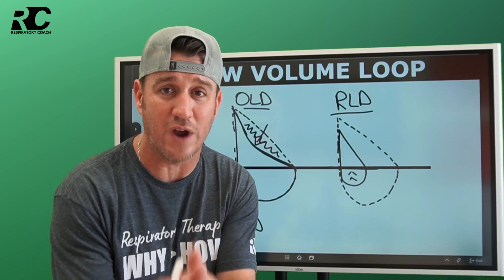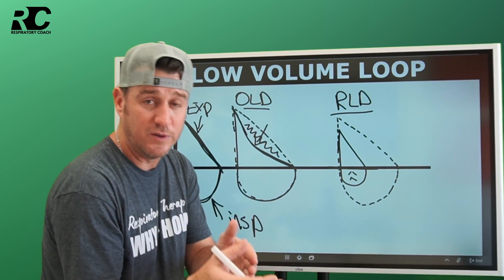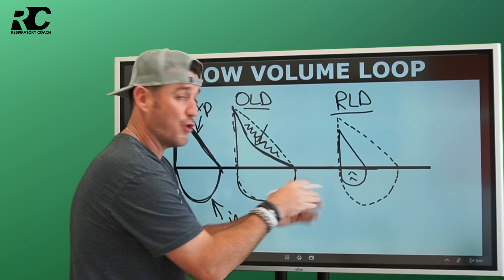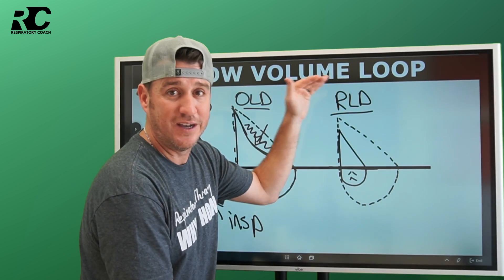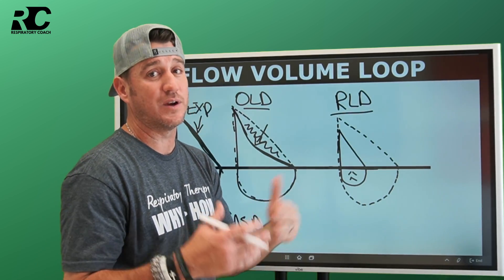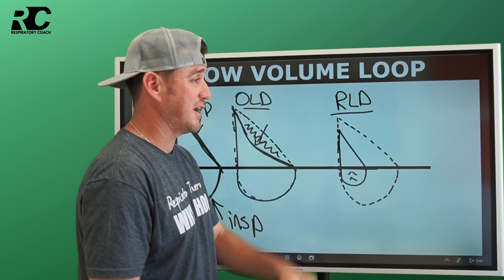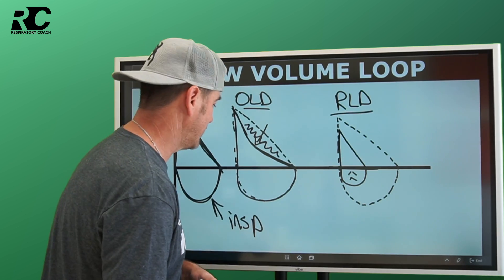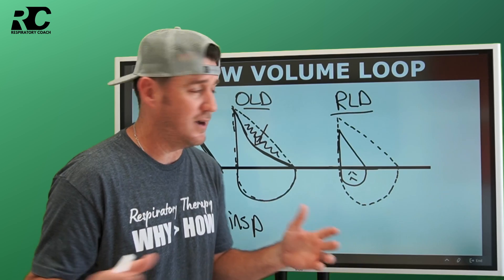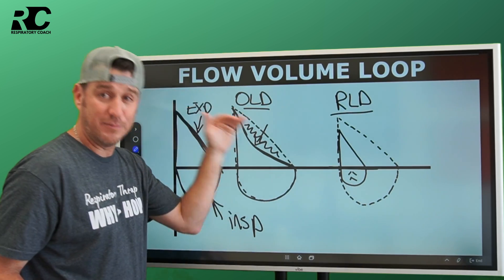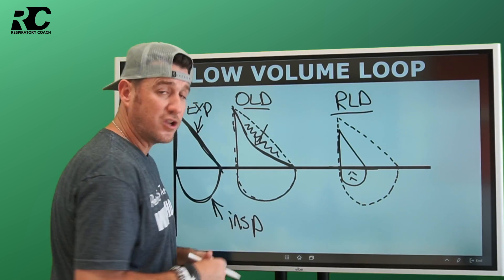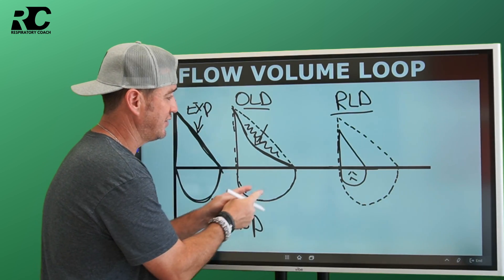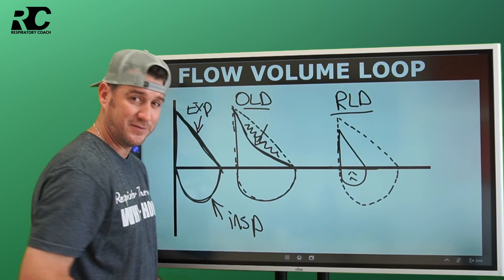We realize that we understand how to differentiate these two. Here's the key take-home message right here. A scoop in the loop equals obstructive lung disease. Think of your C-BABES. A witch's hat or an upside-down ice cream cone? Restrictive lung disease. A lot of times, that's going to bring us back to idiopathic pulmonary fibrosis as well as other restrictive lung diseases such as tuberculosis. There's a whole lot of them out there, but that's the difference between restrictive and obstructive from a flow-volume loop pattern recognition. This is just imagery. If you're a visual learner, this is what you're looking for.